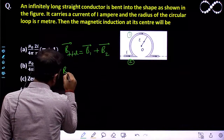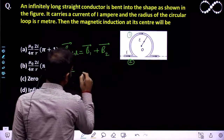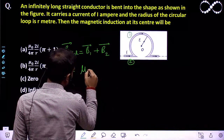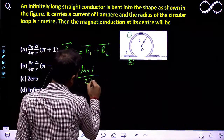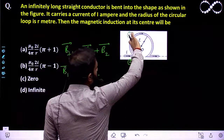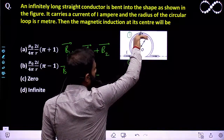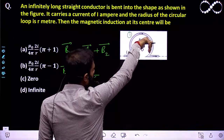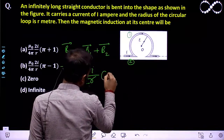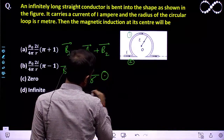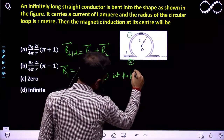Now B1 vector will be equal to — this is the circular loop — so that will be μ₀I upon 2R. And the direction of the magnetic field will be into the plane of paper.